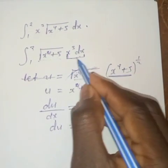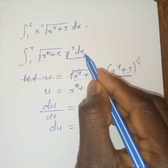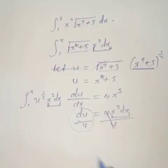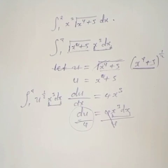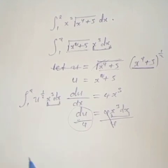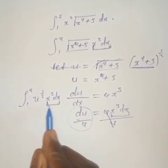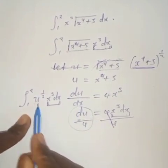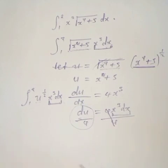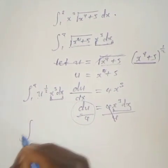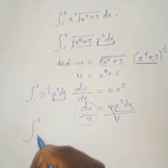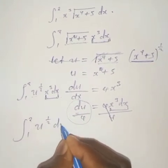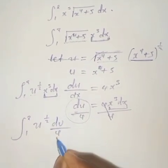I am substituting x³dx within the expression for du. If we replace the root expression with u and x³dx with du over 4, we are now relating u and du, and we can integrate. We are going to have the integral from 1 to 2 of u to the power 1 over 2, du over 4.